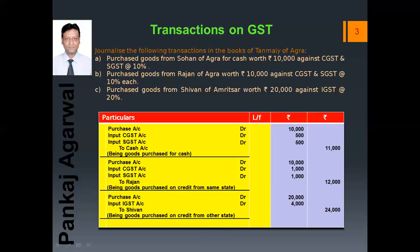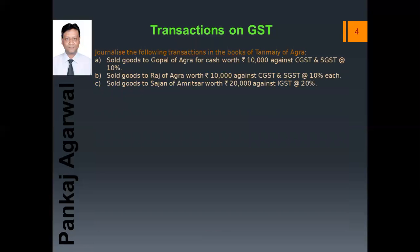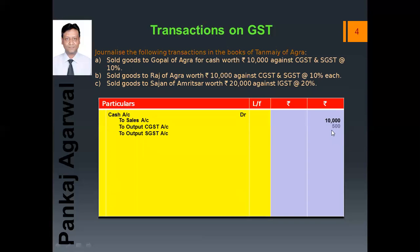These were the transactions on purchases. Now we see the transactions on sales. Sold goods to Gopal of Agra for cash worth ₹10,000 against CGST and SGST at the rate 10%. The journal entry will be: Cash Account debit, to Sales Account, to Output CGST, to Output SGST. First write the amount in front of Sales. Now calculate 5% of ₹10,000, which is ₹500, and again ₹500 for SGST. The total will be ₹11,000. This is goods sold for cash within the state.